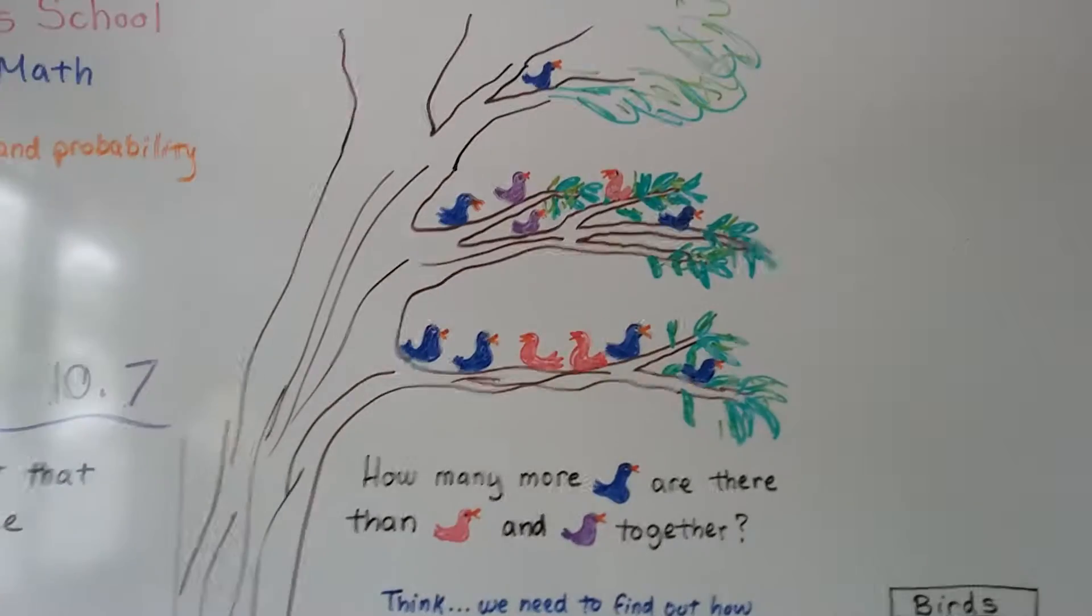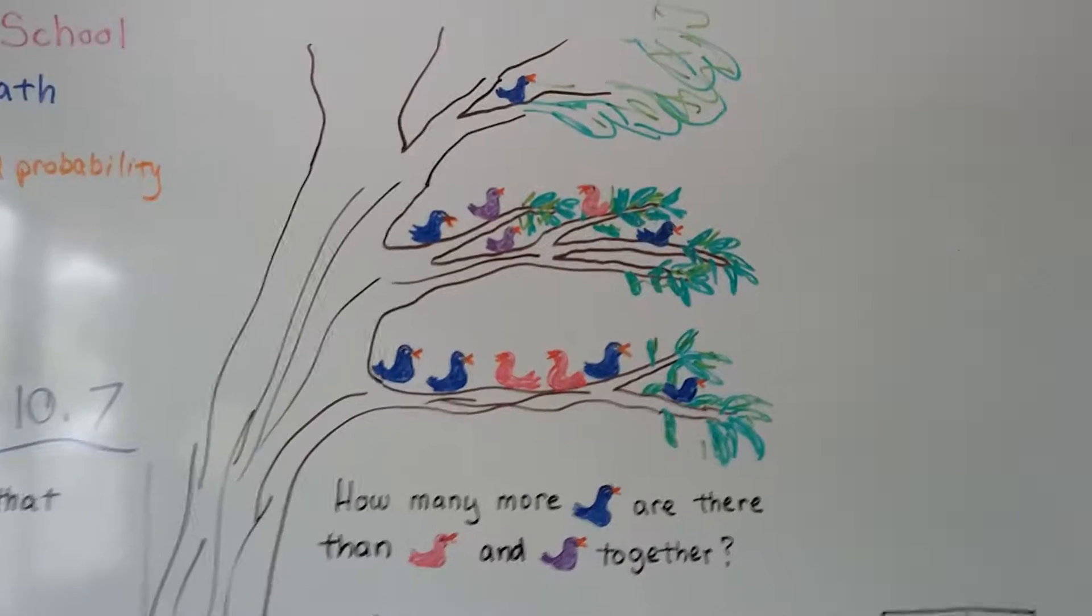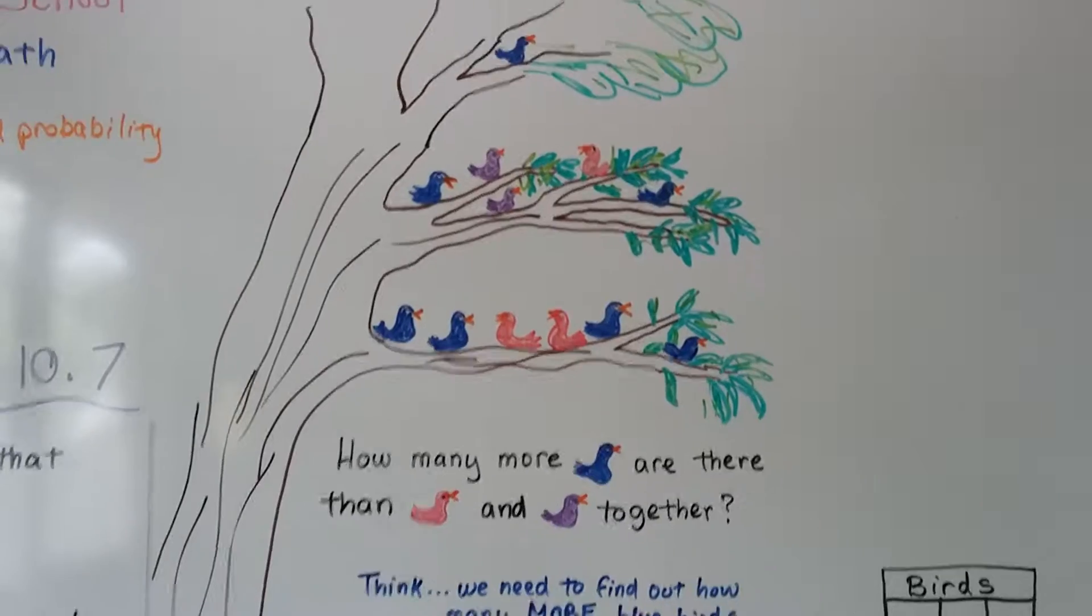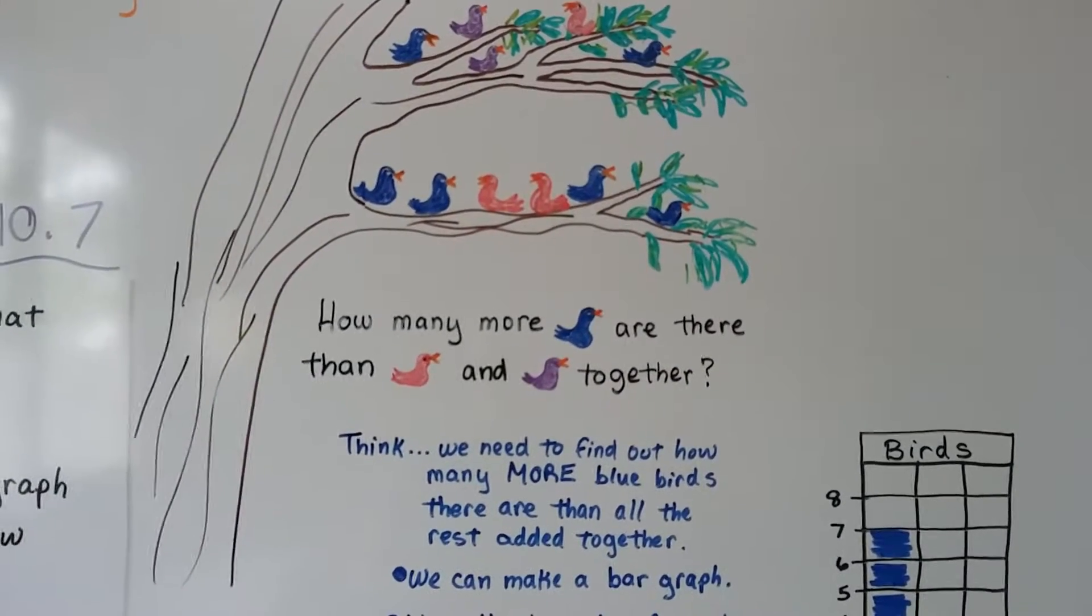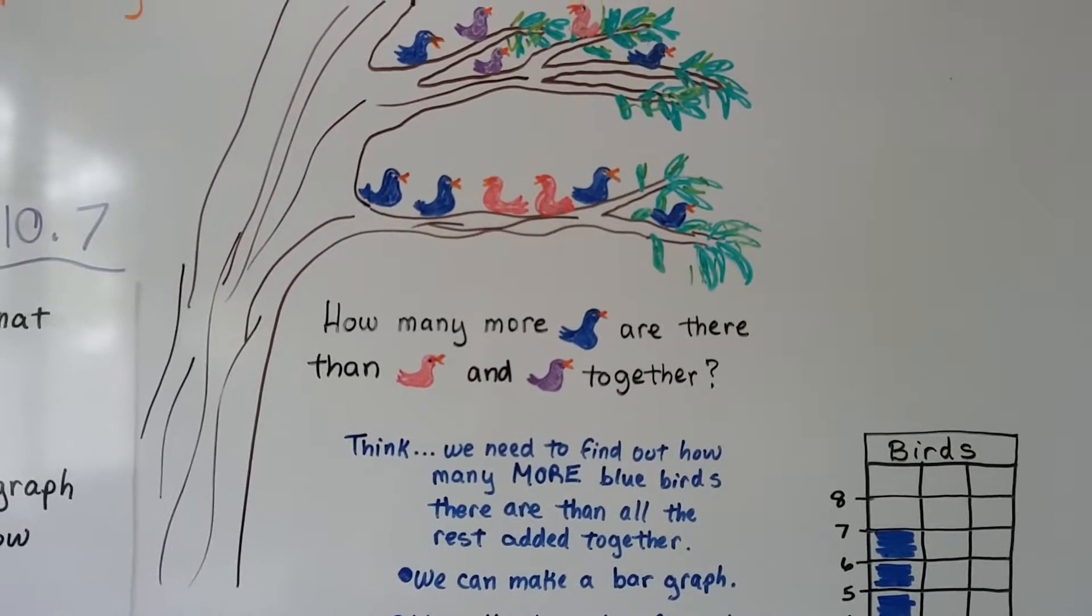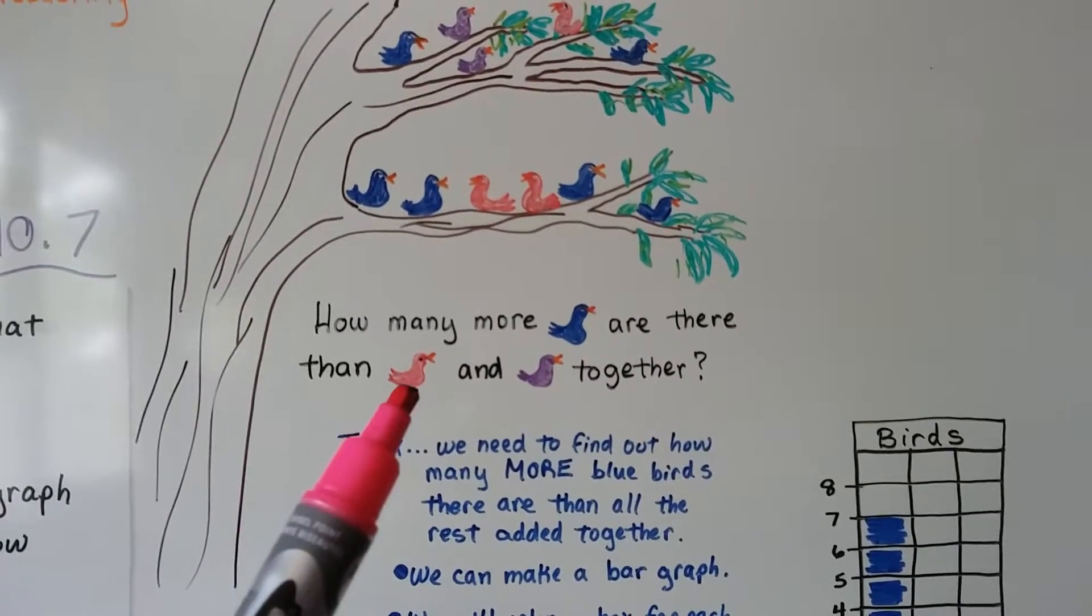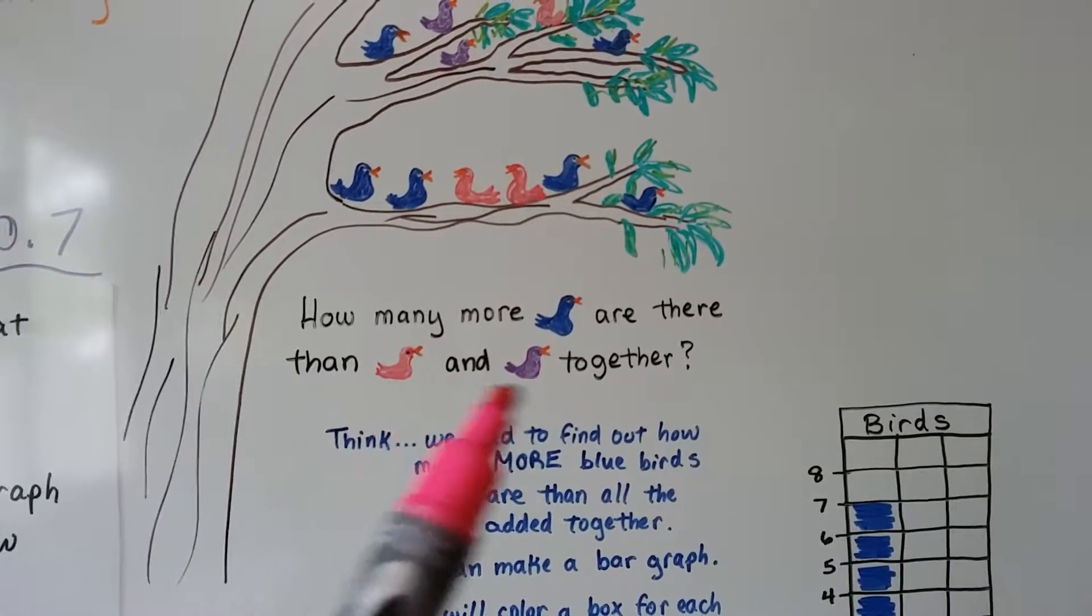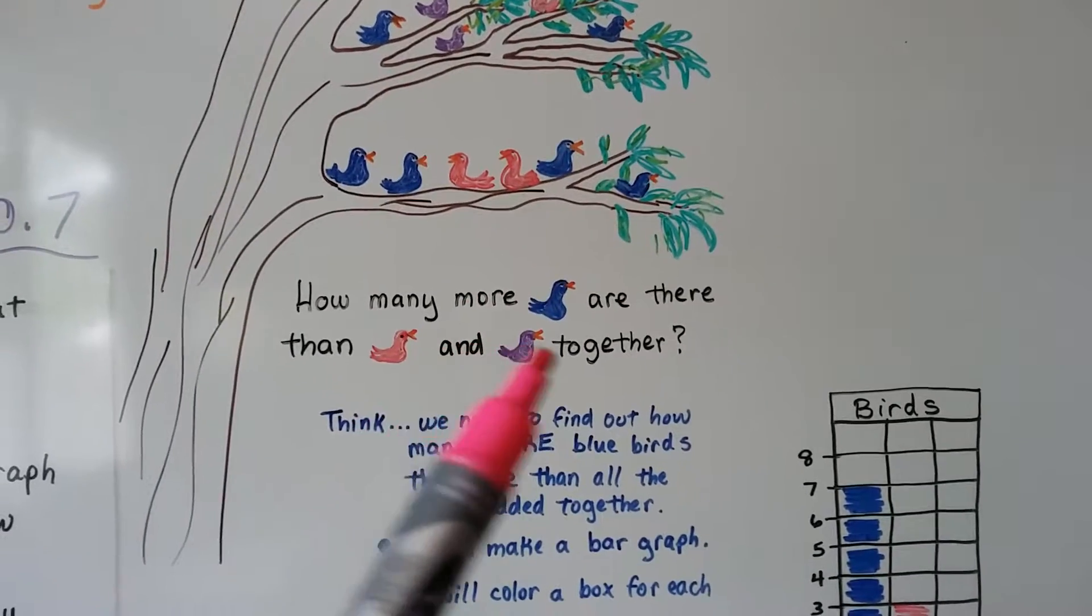Now look at this big tree I drew with all the birds in it. We need to find how many more bluebirds are there than red and purple together. So think. We need to find out how many more bluebirds there are than all the rest added together. Because it says, than the red and purple together. So we're going to have to find out how many there are of each of these and add it together. And then figure out how many more blue ones there are than these.